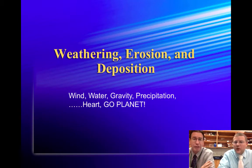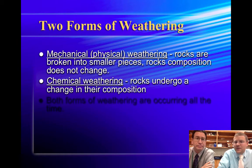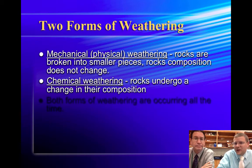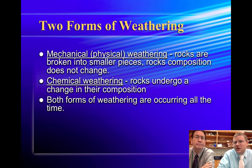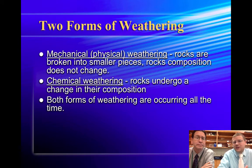Let's start with weathering. There are basically two forms of weathering that can happen. The first one is mechanical weathering, where you physically take a rock and break it into smaller and smaller pieces. The rock doesn't change its composition — the minerals are still the same — but you now just have a large chunk broken into smaller chunks.